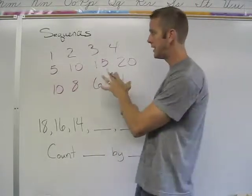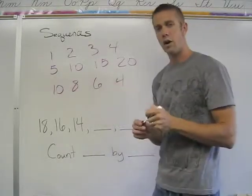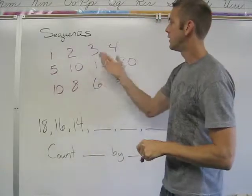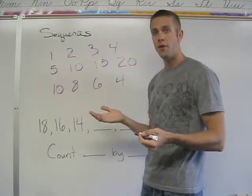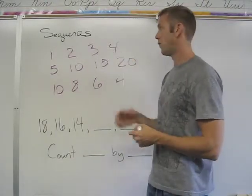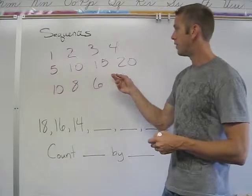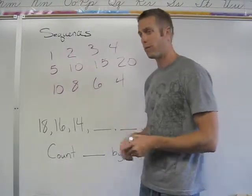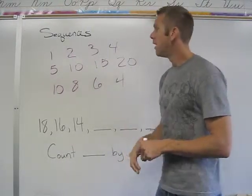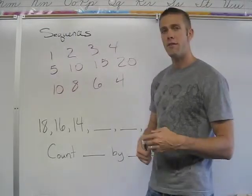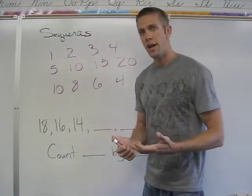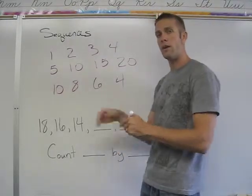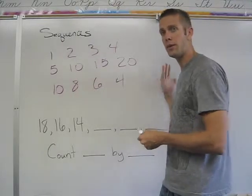Now the numbers in a sequence are called terms — we don't really call them numbers. So in the top one, the 4th term is 4. In this one, the 4th term is 20. And in the last one, the 4th term is 4 once again. Sequences also have a pattern, and if you can find that pattern, then you can find out where the numbers are going to keep continuing to go.